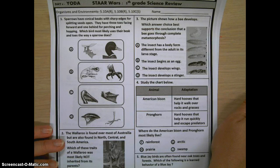Number one, sparrows have conical beaks with sharp edges for splitting seeds open. They have three toes facing forward and one behind for perching and hopping. Which bird most likely uses their beak and toes the way a sparrow does?